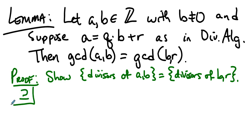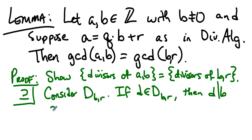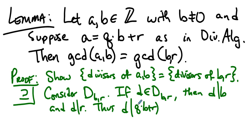Let's go first in one direction, showing that all divisors of b and r are also divisors of a and b. Consider the set of divisors of b and r. If d is a divisor of b and r, then d divides b and d divides r. If d divides b and d divides r, then d divides their sum, and so d divides a as needed. Because if d divides b and d divides a, then d is in this set.